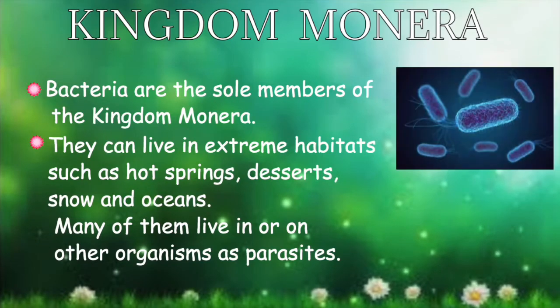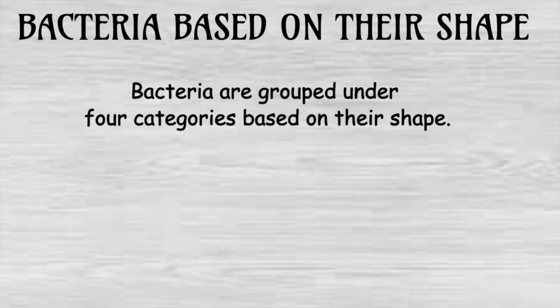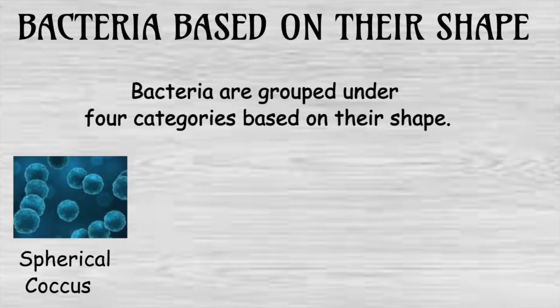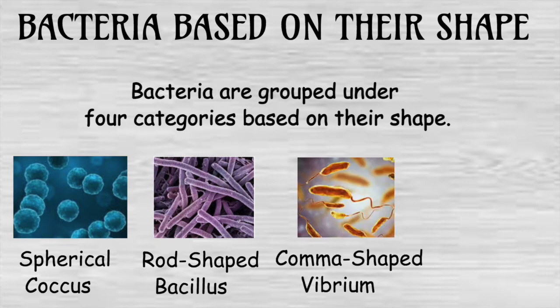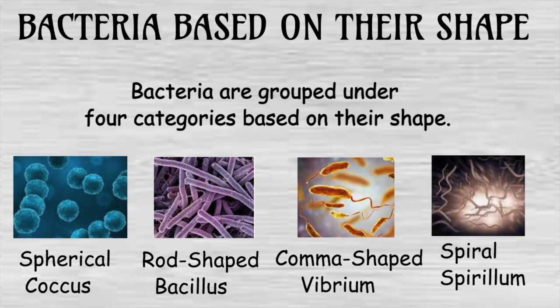Bacteria are the sole members of the kingdom Monera. They can live in extreme habitats such as hot springs, deserts, snow, and oceans. Many of them live in or on other organisms as parasites. Bacteria are grouped under four categories based on their shape: spherical-shaped coccus, rod-shaped bacillus, comma-shaped vibrio, and spiral spirillum.